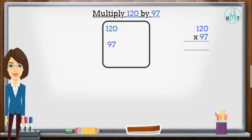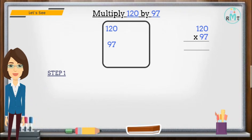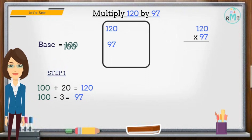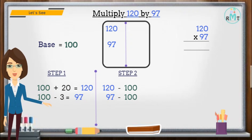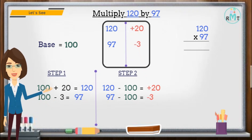Let's take one more example. Multiply 120 by 97. Step 1: first we have to select the base. Since both numbers are close to 100, our base is 100. Step 2: subtract 120 and 97 from the base, which is 100. The difference between 120 and 100 is plus 20. Similarly, the difference between 97 and 100 is minus 3. Now we multiply plus 20 with minus 3, so we get minus 60.